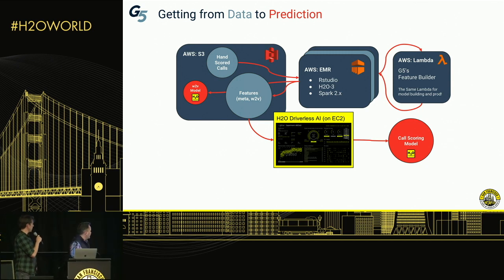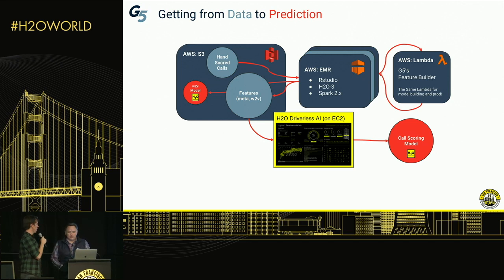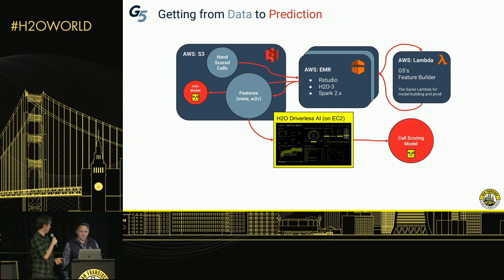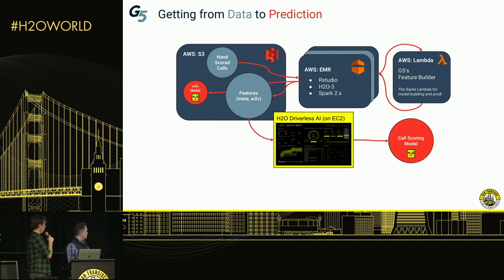As Martin said, we became fairly confident with what he had built largely in H2O and in Driverless. But as a matter of putting it into production, we needed to be confident that we could put that predictor into production and make it available to our clients as a product. In this visualization, we're showing how we get from that data to a predictive model, and then we'll speak about how that predictive model gets out into production.